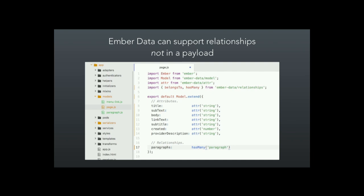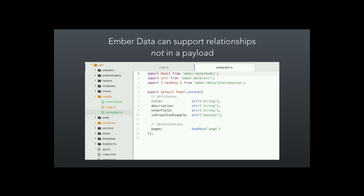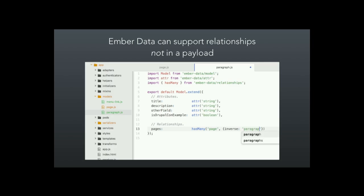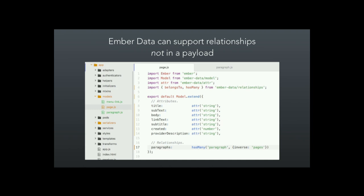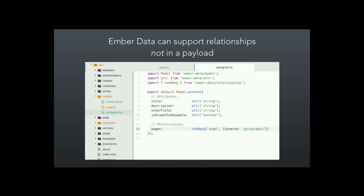That means you can do things in Ember that Drupal core might not ship with or might be complicated to do. For example, we wanted to see whether or not we could see where a paragraph was attached to a node. By defining an inverse to a page — and on the page defining the relationship to our paragraphs — we can see from the perspective of the paragraph what page it's attached to. Normally in Drupal, you only see what a paragraph is attached to by looking at the page it's on. You can't look at it the other way.